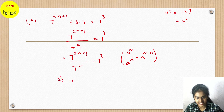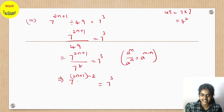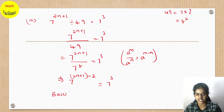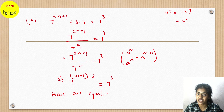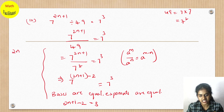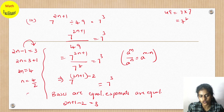So we write 7^(2n+1-2) equals 7³. The bases are equal, so we equate the exponents: 2n + 1 - 2 = 3, which gives 2n - 1 = 3. Transposing -1 to the LHS: 2n = 4. So n equals 4 ÷ 2 equals 2.